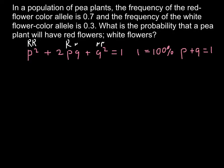And we also told that red flower color allele frequency is 0.7, and white color allele is 0.3. So we can say that if p would be 0.7 and q is equal to 0.3.